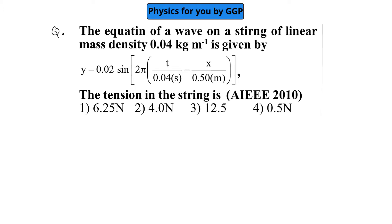The value of μ is 0.04 and the equation is y = 0.02 sin(2π × t/0.04 minus... if you multiply this 2π, we can write 2π/0.5 × x).